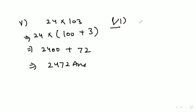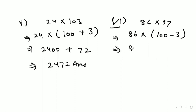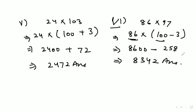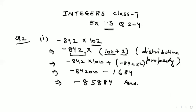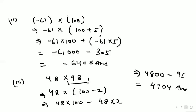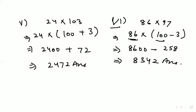The sixth part, which is the last part of question number 2: 86 into 97. We write 97 as 100 minus 3. So 86 into 100 is 8,600, minus 86 into 3 which equals 258. So 8,600 minus 258 equals 8,342. This is our answer for the sixth part of question number 2. Have a full glance of all six parts.